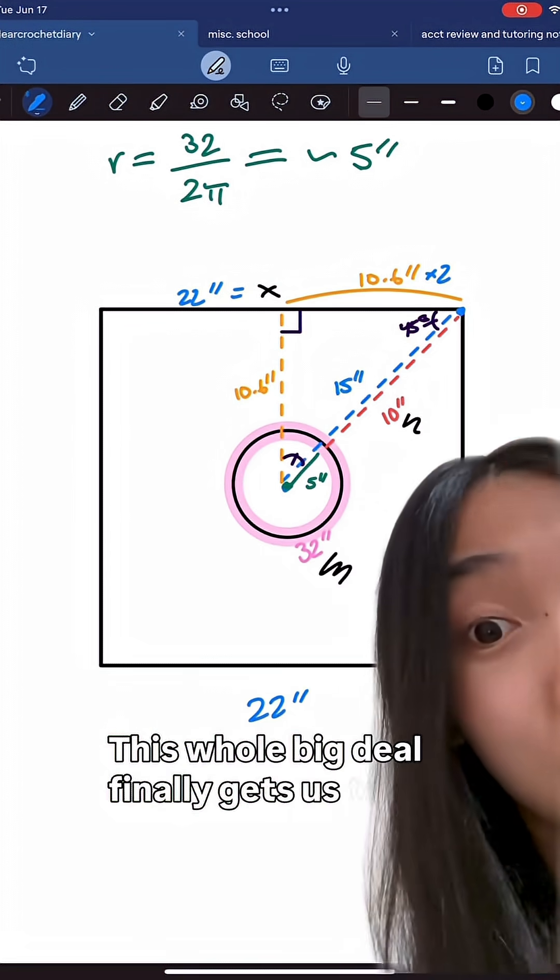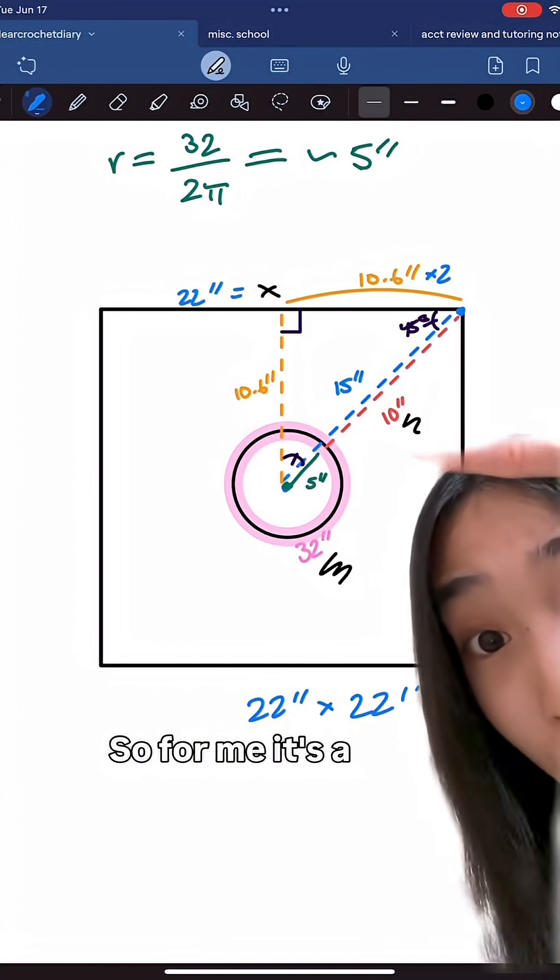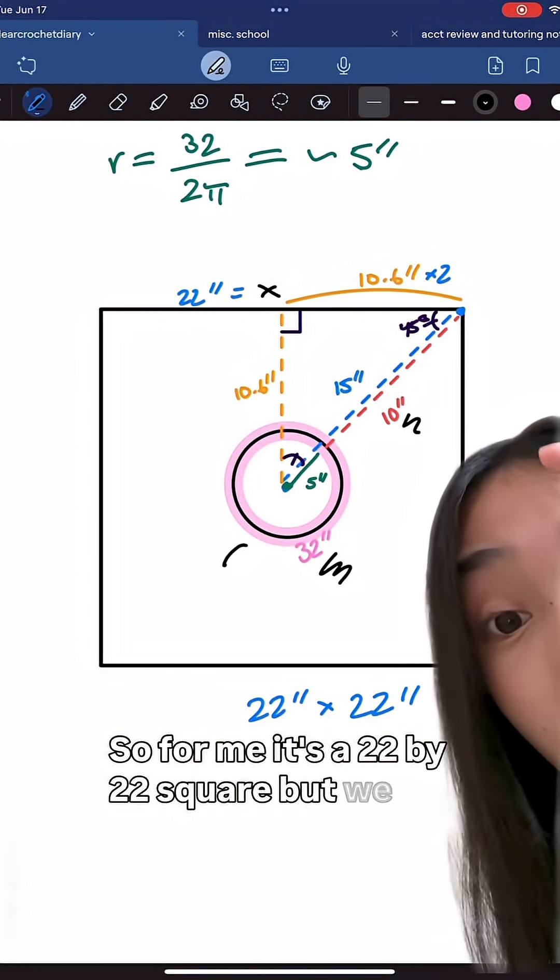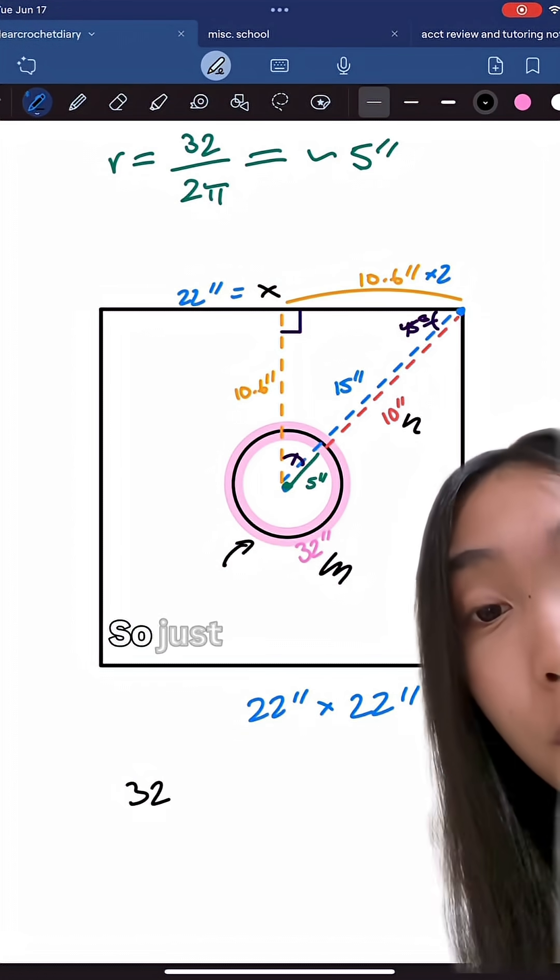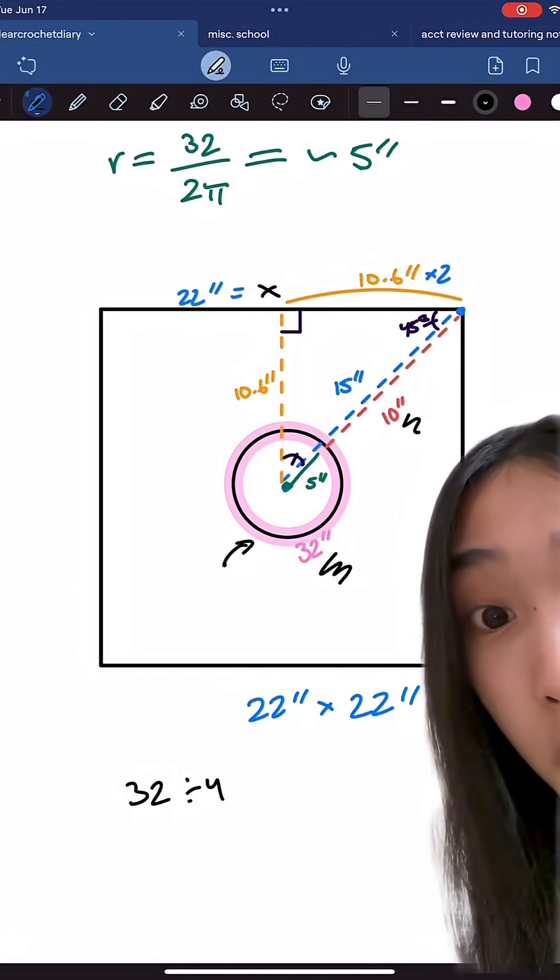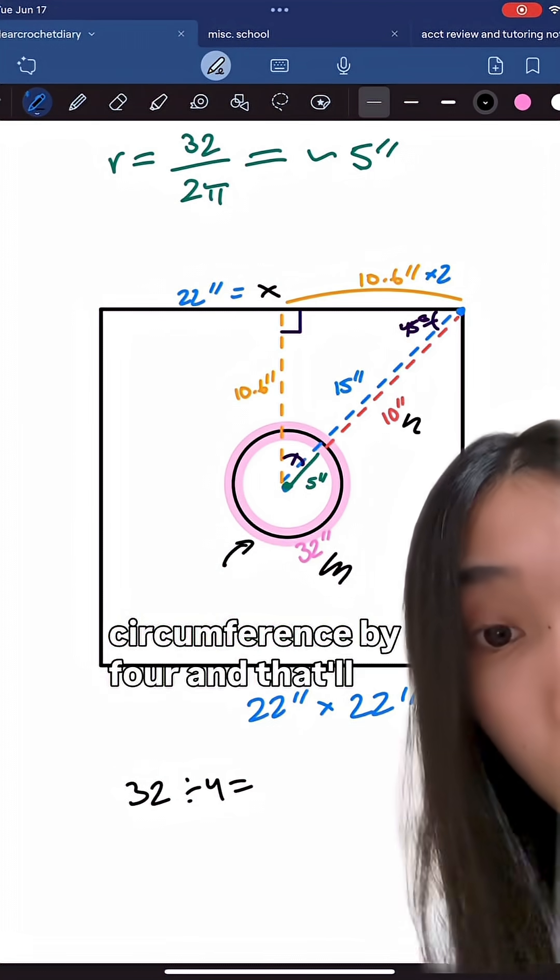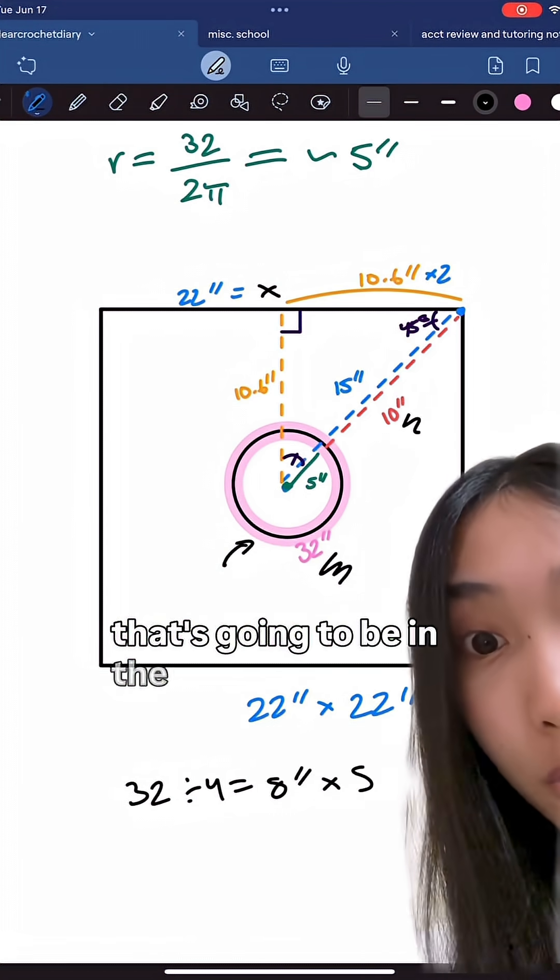This whole big deal finally gets us to our final dimension. So for me, it's a 22 by 22 square, but we also need to account for the hole that's going to be in the middle for the opening. So just go ahead and divide your circumference by four and that will give you the dimensions for the square hole that's going to be in the middle.